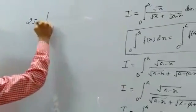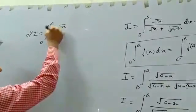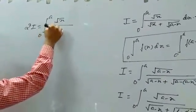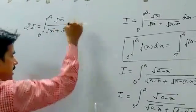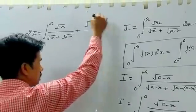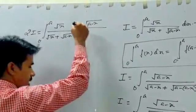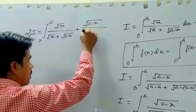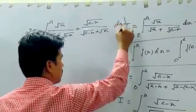We get 2I is equal to integral from 0 to A of square root of x divided by square root of x plus square root of A minus x, plus square root of A minus x divided by square root of A minus x plus square root of x.